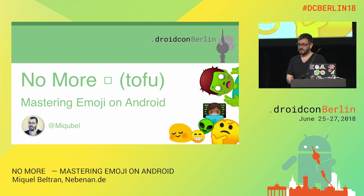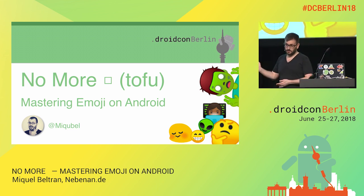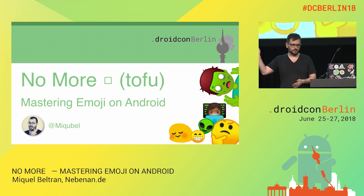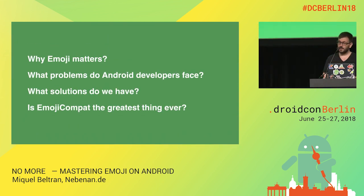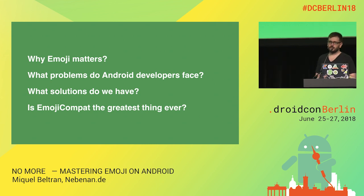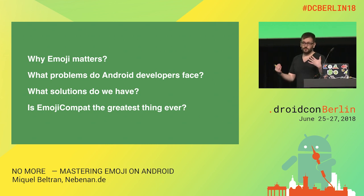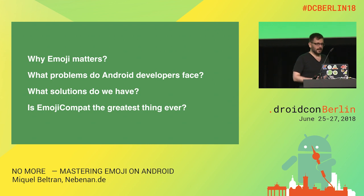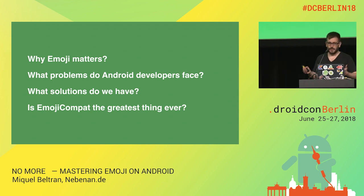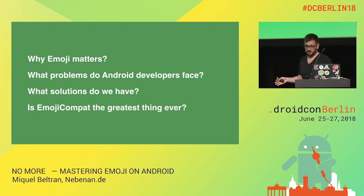You can find these slides on Twitter — go to my Twitter account and you will find them there. Today I'll be answering the following questions: Why is emoji relevant to developers? What do you need to know about it? What are the problems that Android developers face with it? What are the solutions we can find? And definitely: is EmojiCompat the best thing that happened to Android in the last years?